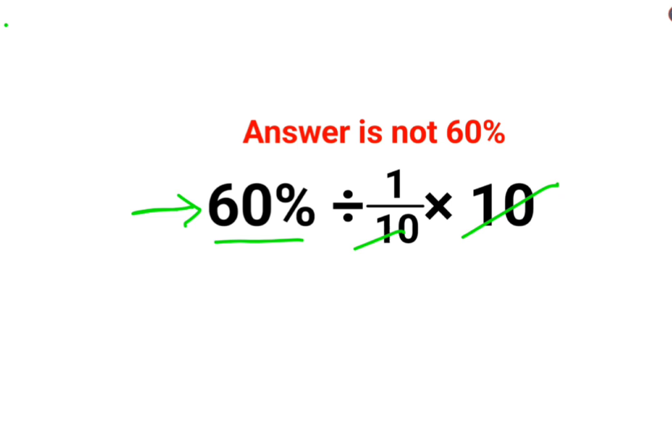So people do this, they cancel 10 and 10. So we are just left with 60% divided by 1 which gets you 60%. No, that's not how this is done.